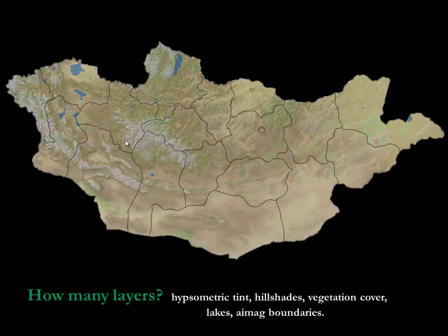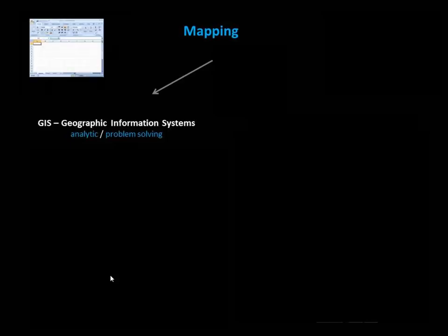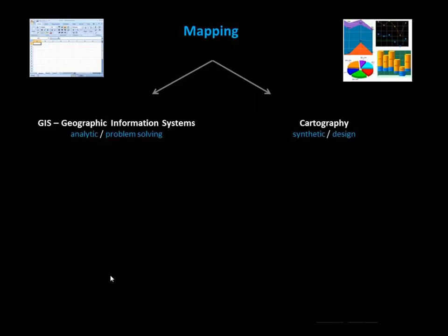Mapping uses geographic information systems, which involves analytic and problem-solving skills. What you end up doing is more like Excel or spreadsheet work — managing data, asking questions with the data, making summaries. The computer will output whatever you tell it to do, but you have to be smart about it. Cartography, or map making, is more design-oriented and synthetic — it's how you make things look. The equivalent would be making pie charts, scatter plots, or writing reports and making visuals.